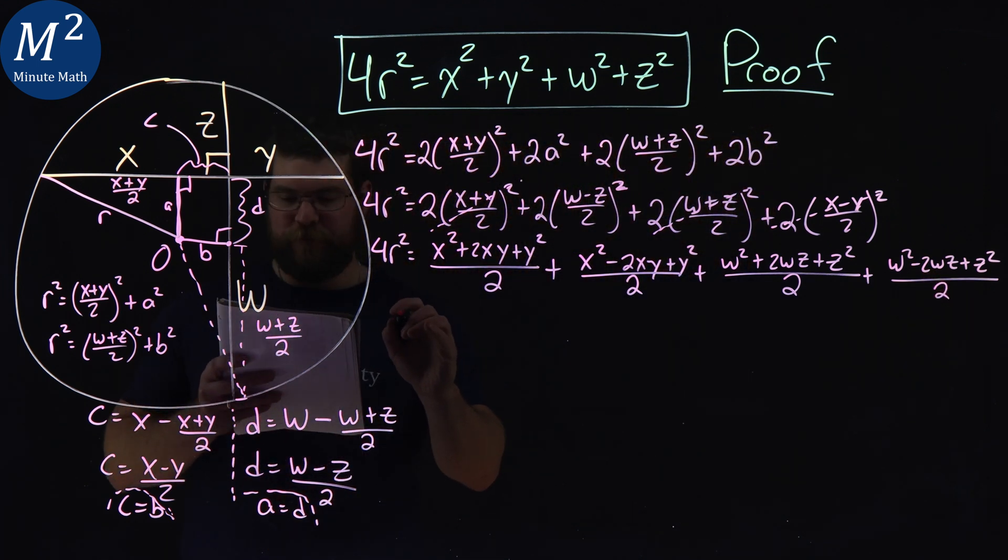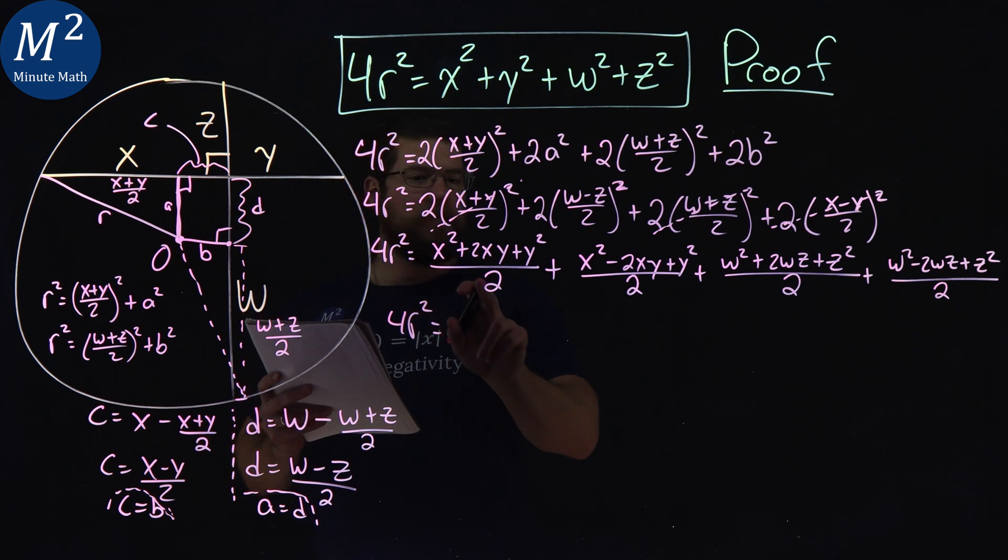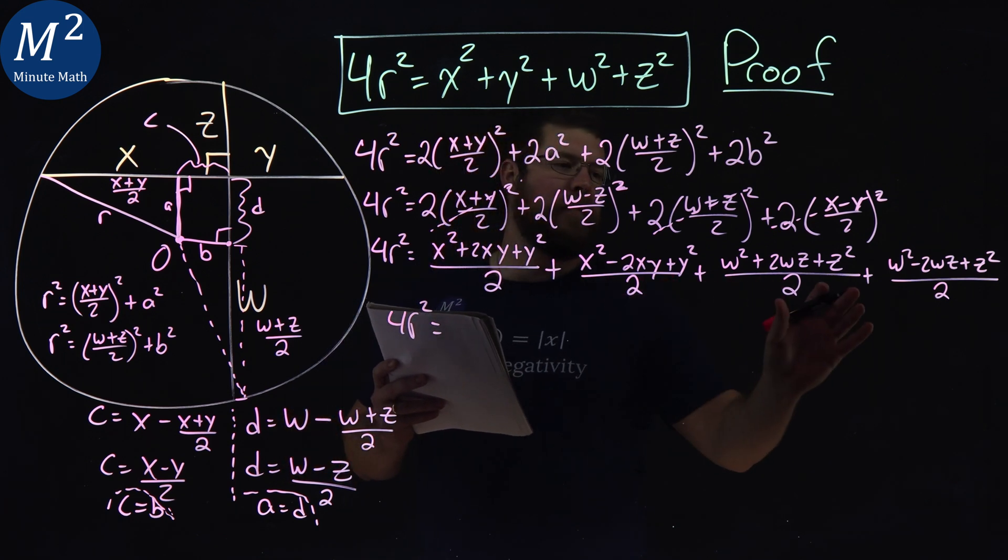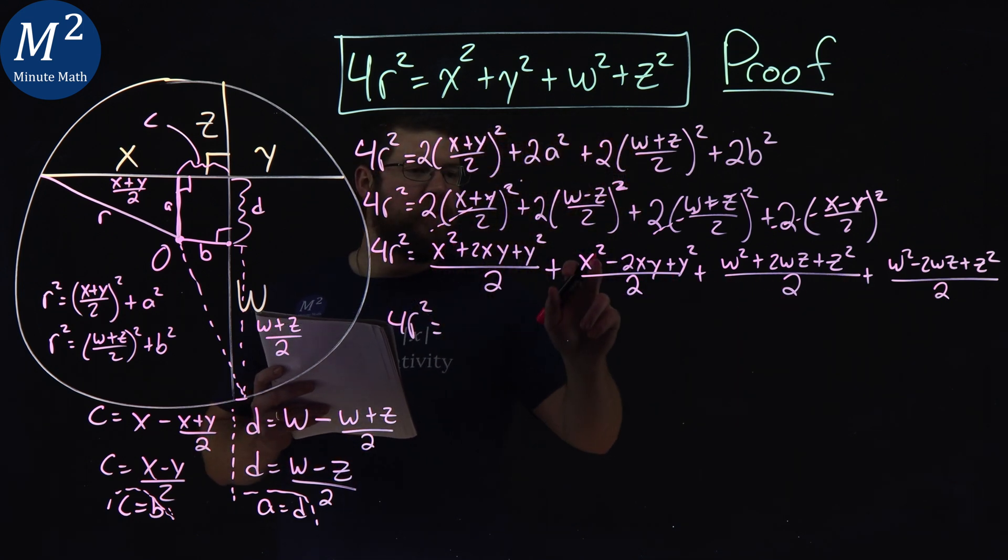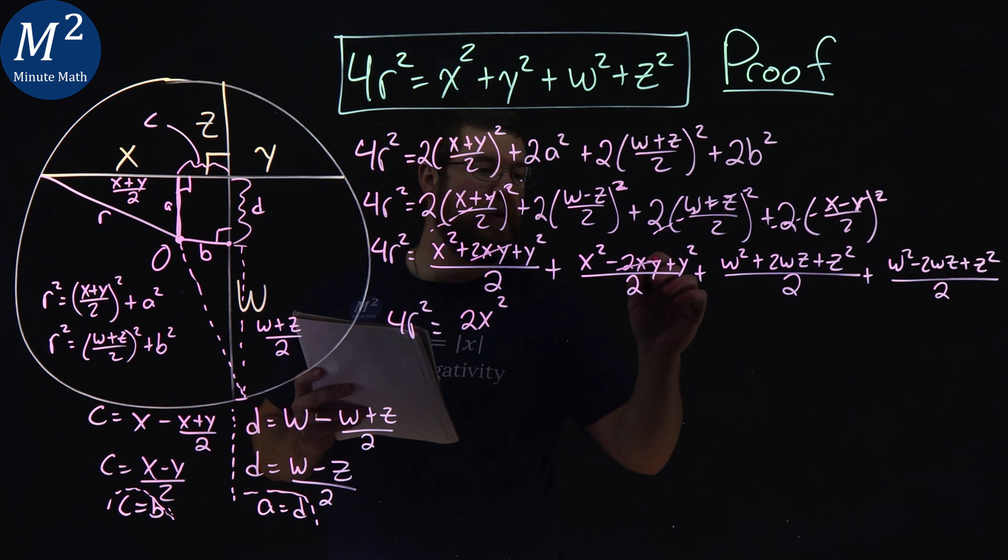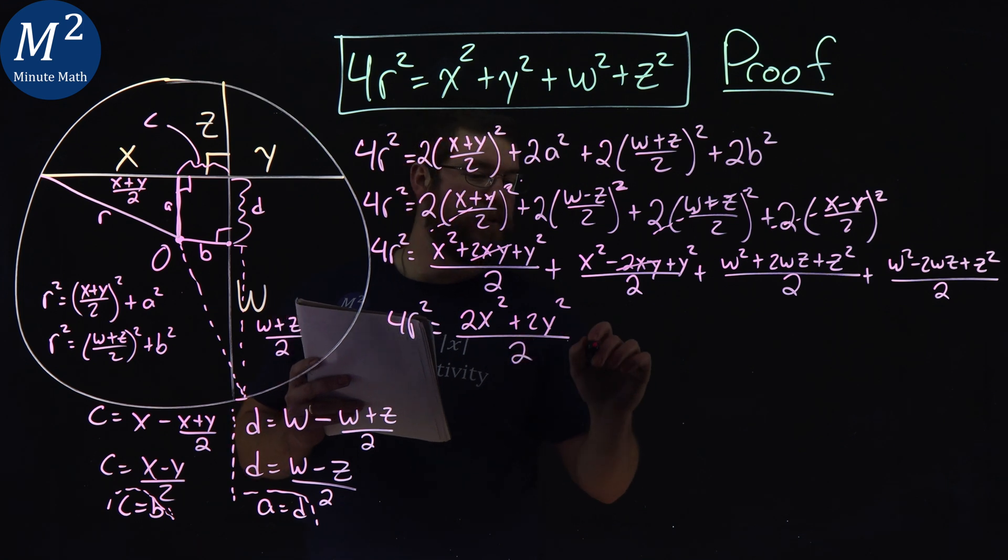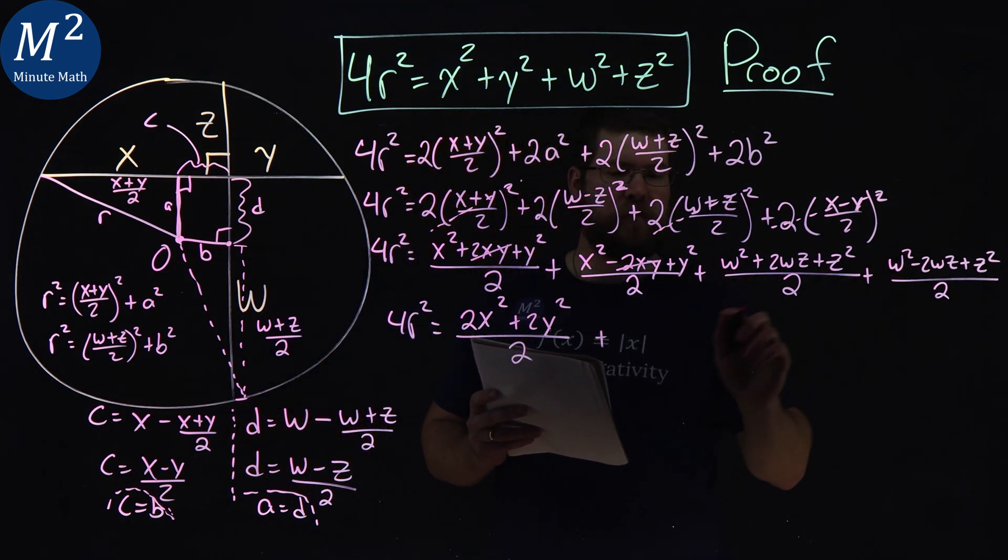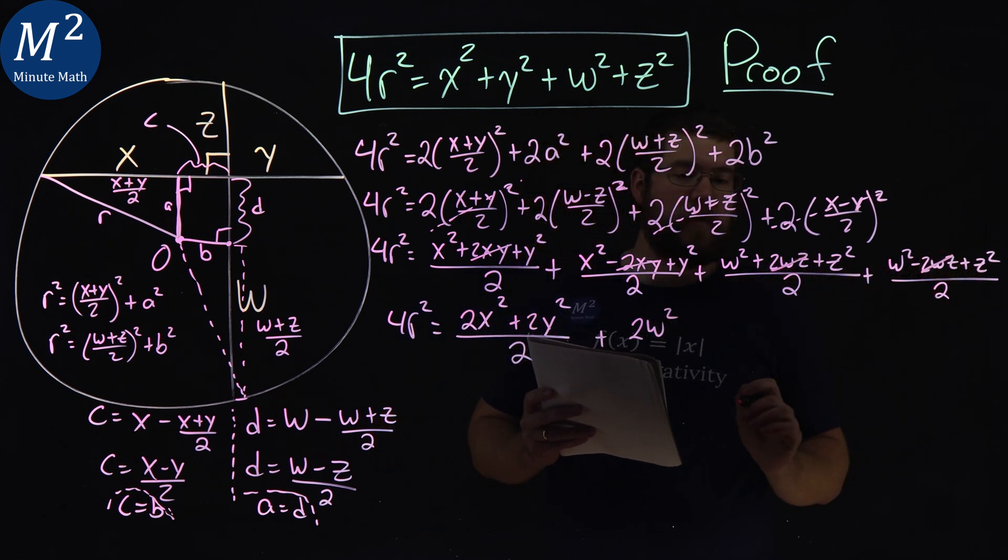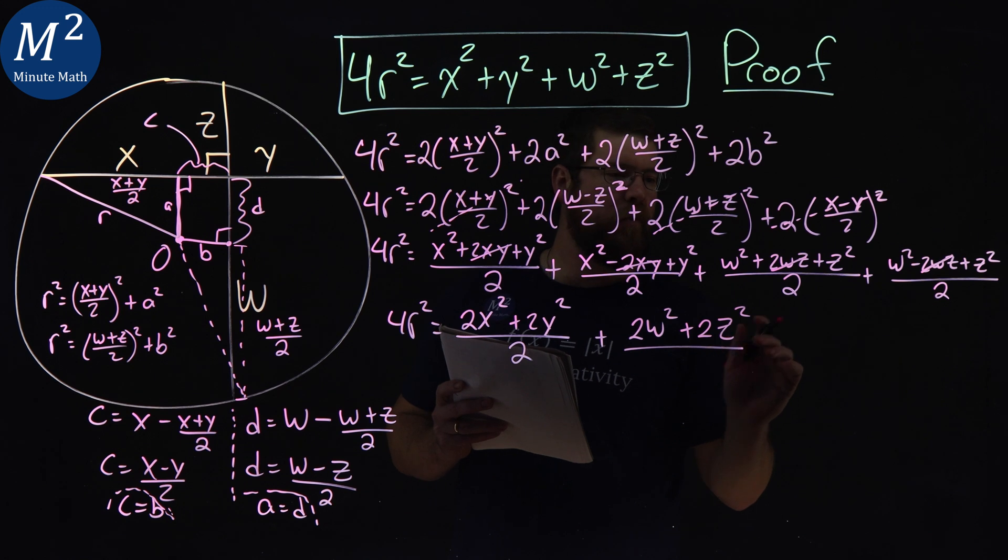Let's combine our like terms. We have 4r² equals, and we have the same denominator all the way across. x² + x² is 2x². The 2xy minus 2xy cancel out. y² + y² is 2y² over 2. Same thing here: w² + w² is 2w². 2wz cancel out with minus 2wz.